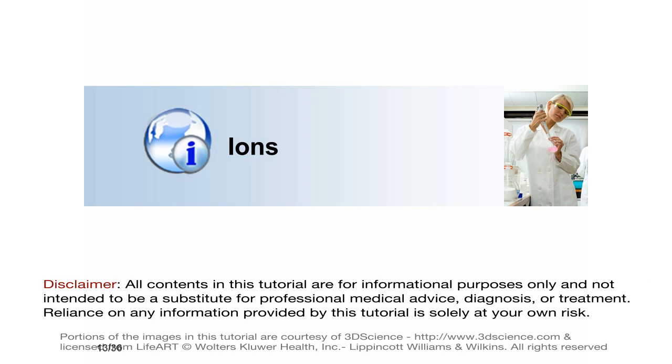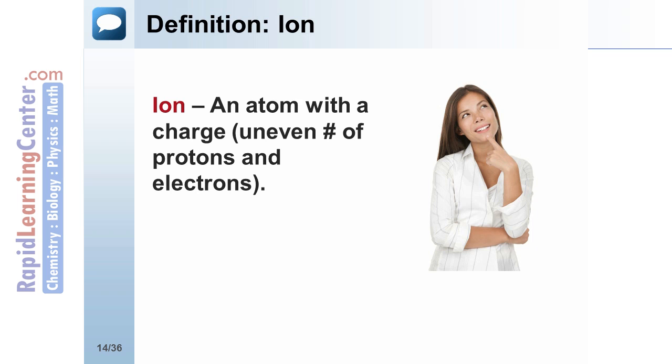What are ions? How are they formed? An ion is an atom with a charge, with an uneven number of protons and electrons.